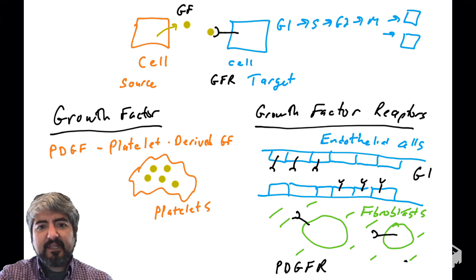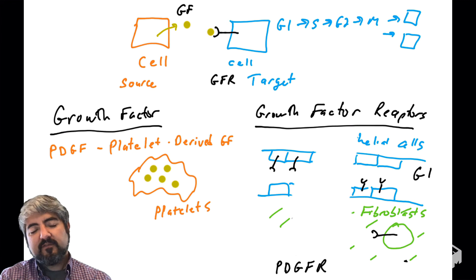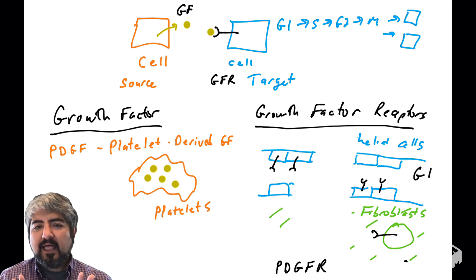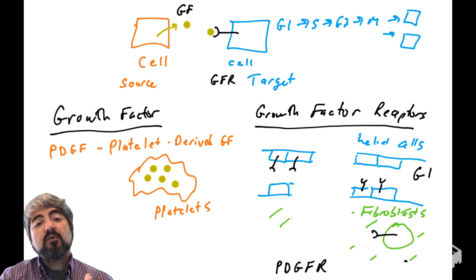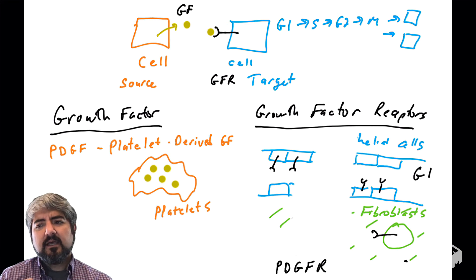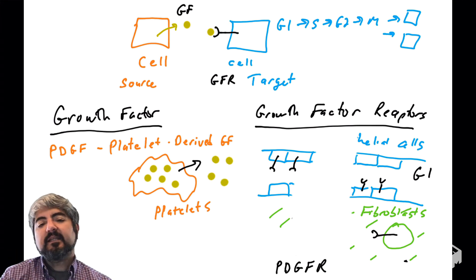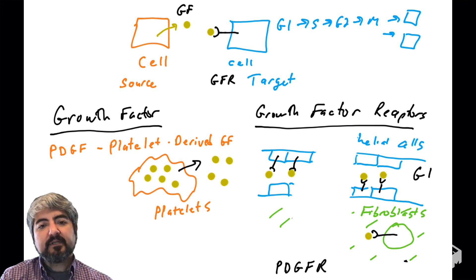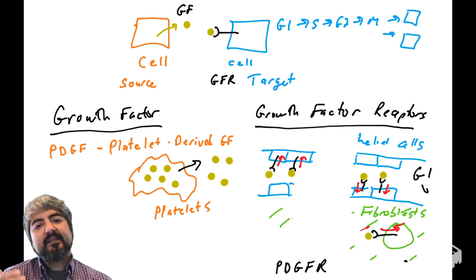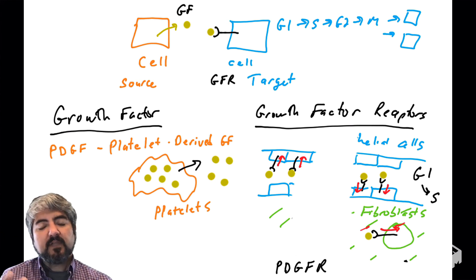So these cells are just sitting in G1. Why do we need more cells? Maybe there's been tissue damage — there's been a cut, some blood loss. What do platelets do? They're involved in clotting, but this is about cell growth and division. When platelets activate, one of their functions is to release PDGF. When PDGF is released, it's going to bind PDGF receptors, and when it binds the receptors, these cells get a signal — extracellular signaling, signal goes into the cell — and these cells that were sitting in G1 now go through S phase, G2, M, and make more cells.